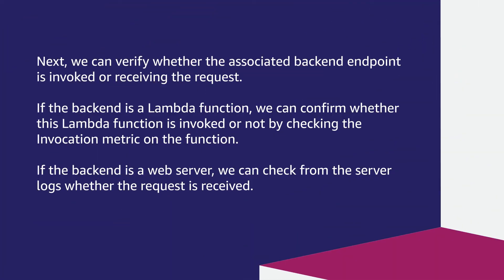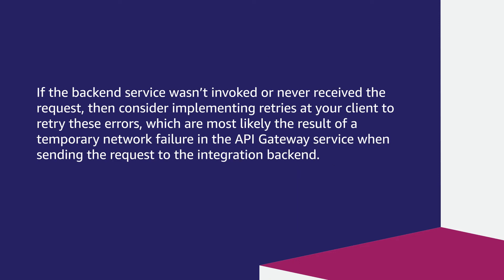Next, we can verify whether the associated backend endpoint is invoked or receiving the request. If the backend is a Lambda function, we can confirm whether the Lambda function is invoked by checking the invocation metric on the function. If the backend is a web server, we can check from the server logs whether the request is received. If the backend service wasn't invoked or never received the request, then consider implementing retries at your client, as these errors are most likely a result of a temporary network failure in the API Gateway service when sending the request to the integration backend.